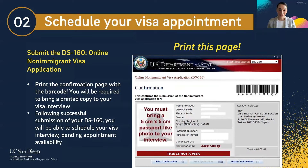Once you've filled out and submitted the DS-160, you will be shown a confirmation page with a barcode at the top. Print this confirmation page — you will be required to bring the printed copy to your visa interview appointment. Following successful submission of your DS-160, you will be able to access your local embassy or consulate's visa appointment scheduling tool. Every consulate and embassy uses a different system, but you will be able to access it once you have submitted the DS-160, and then schedule your visa interview pending upcoming appointment availability.